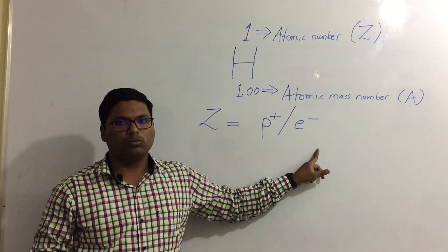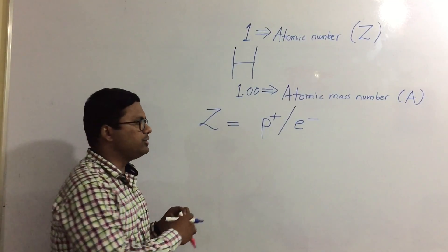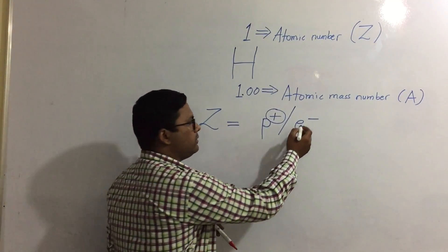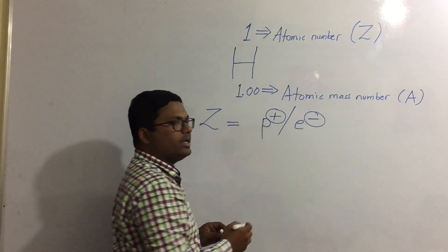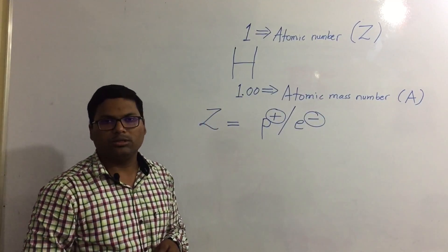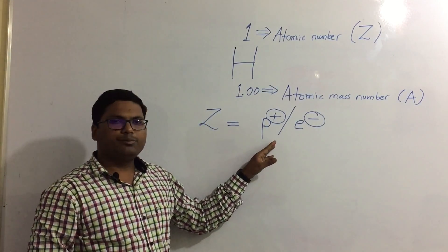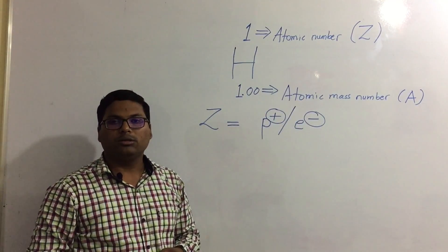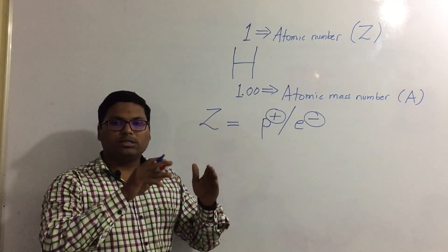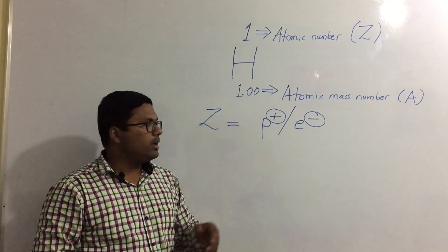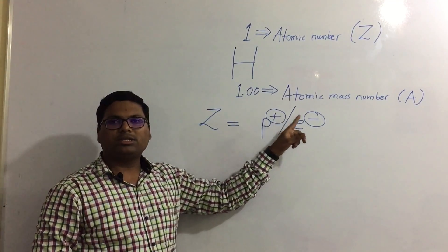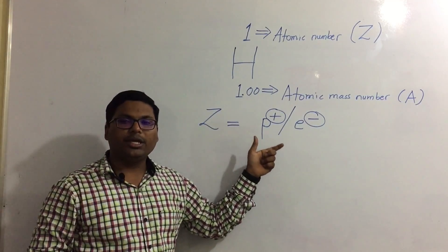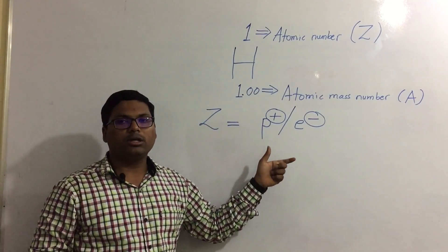So the positive charge is always equal to the negative charge. If three protons are there, then three electrons will be revolving outside the nucleus. Since the charges are equal, the atom is neutral in nature.